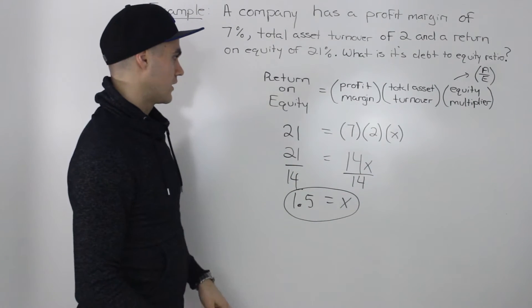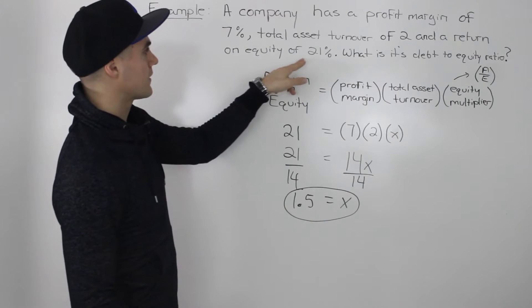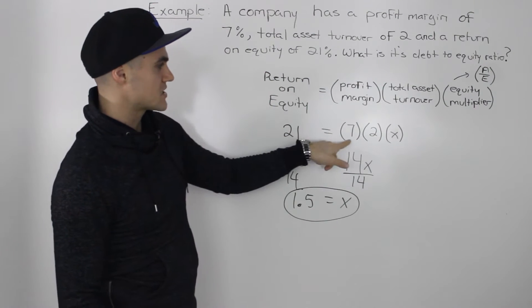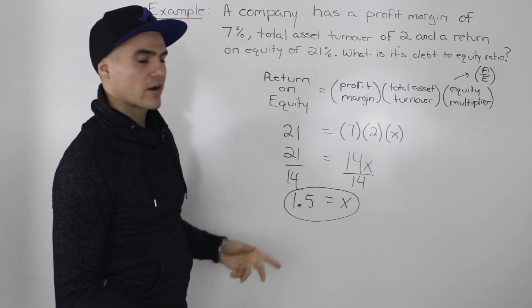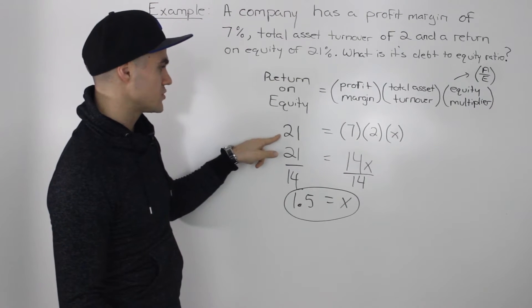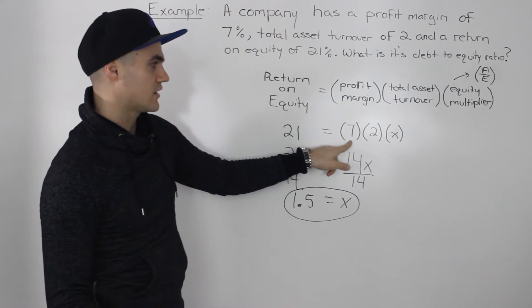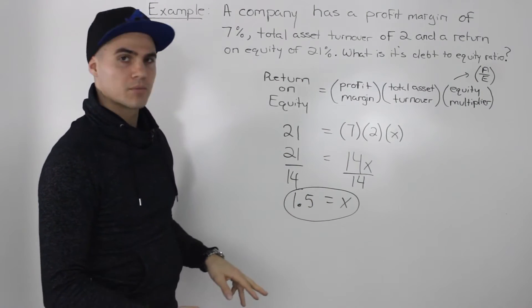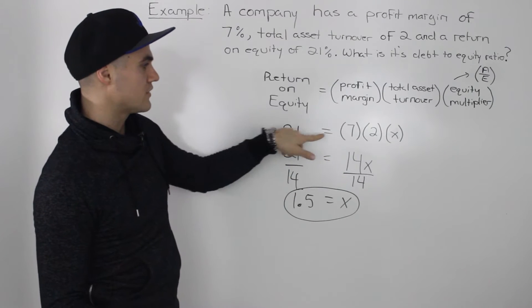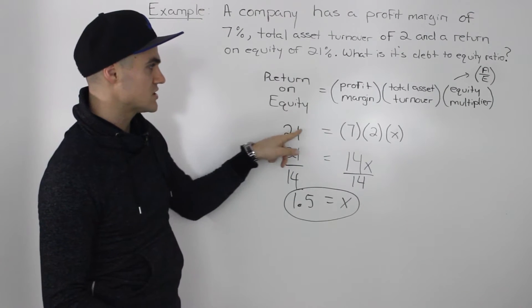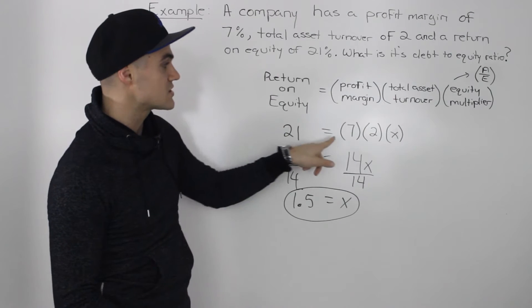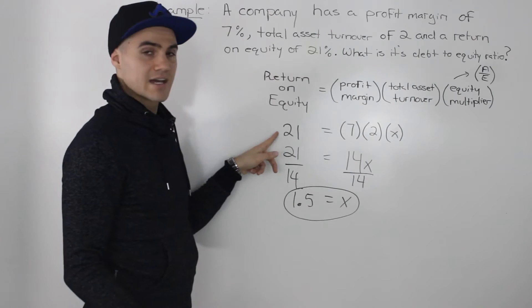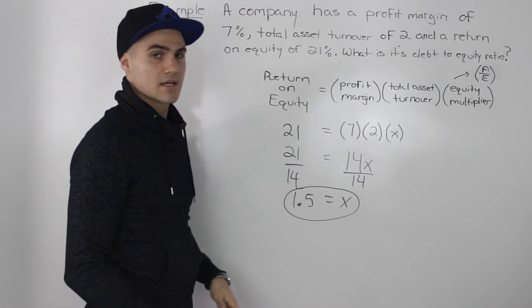One more thing I want to point out before moving on is how this return on equity of 21% and this profit margin of 7%, I kept as percentages here. However, I could have switched them both into decimals as well. I could have put 0.21 here and then 0.07 here, and we still would have got the same X value of 1.5. But the point is you want to make sure that both of these are congruent. If the return on equity is in percentages, the profit margin has to be in percentages. If the return on equity is in decimals, then the profit margin has to be in decimals as well.